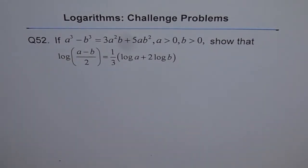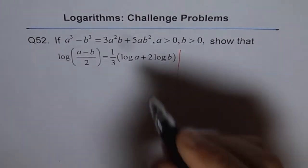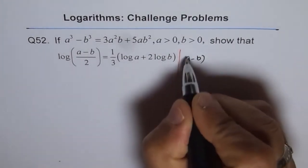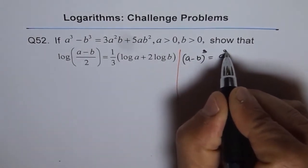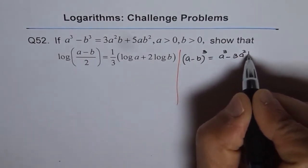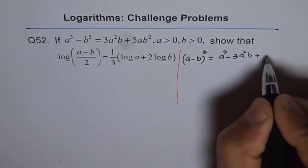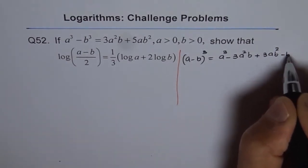So, you remember what is the formula for a minus b whole cube? Let me write this here for you, and then we'll try to solve from there. a minus b whole cube is a cube minus 3a square b plus 3ab square minus b cube.